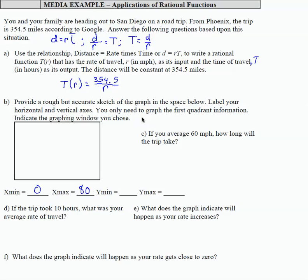So when I enter this into my calculator, I'm going to enter y1 equals 354.5 over x. And I'm going to go to window and put 0 to 80 for xmin to xmax, and then ymin at 0. Again, we don't care about negative time. And then ymax of 500.